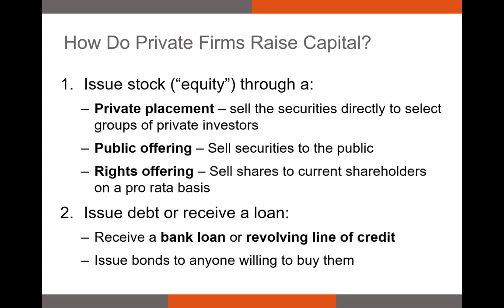Firms can also raise capital via a debt issuance or a bank loan. When a firm receives a bank loan, this is often from one or several different commercial banks or other financial institutions. Firms can also receive a revolving credit line or revolver, which allows them to borrow up to a certain amount as long as the firm pays off their line of credit at least once every few months or every year. Firms that issue bonds can issue them privately or to the public, and many corporate bonds are traded on secondary bond exchanges like the NYSE bond market.